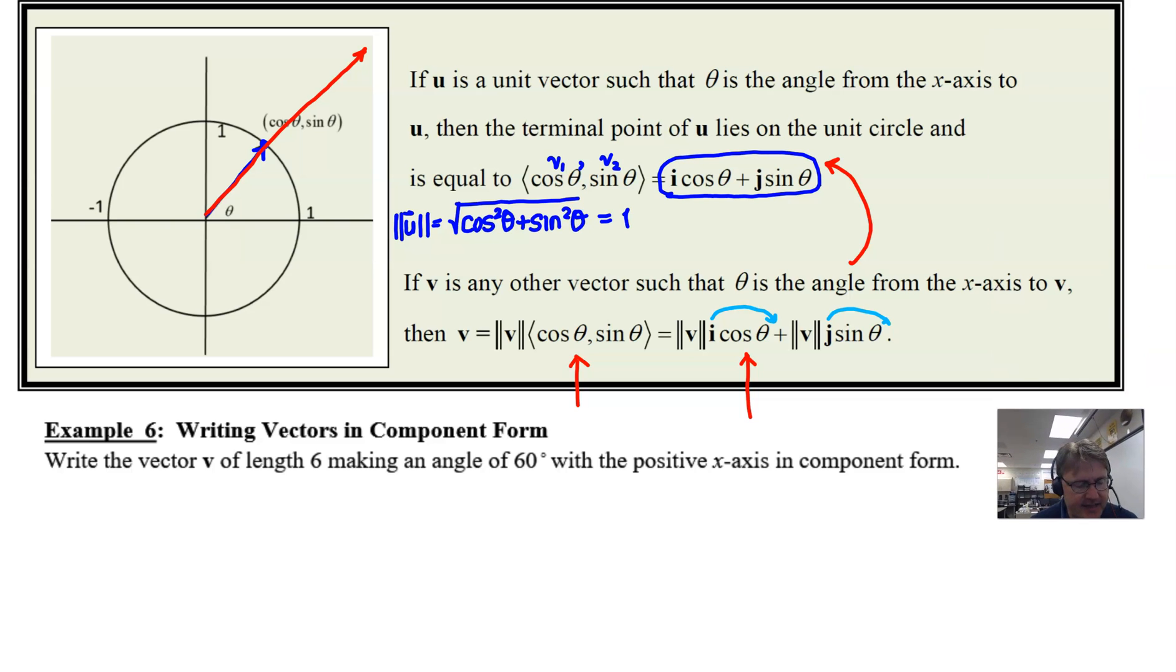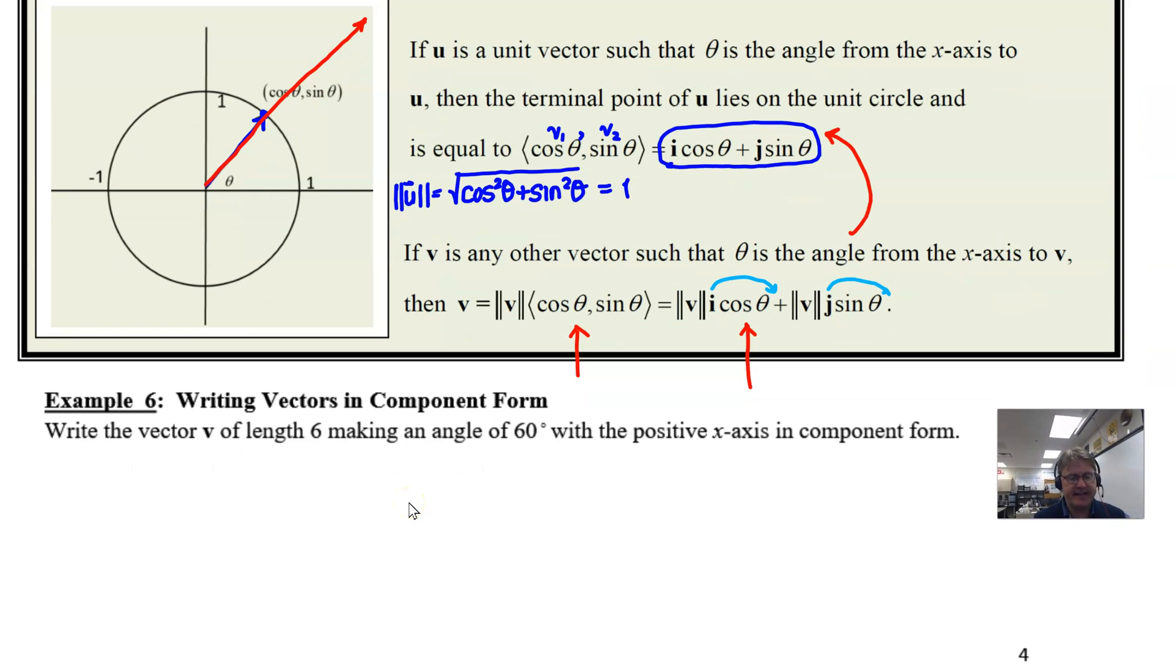It says that you want to write a vector V that has a length of six, making an angle of 60 degrees with the positive x axis. And you want to do so in component form. And I may go ahead and maybe extend this a little bit. We can write it in some linear IJ, linear combination form.